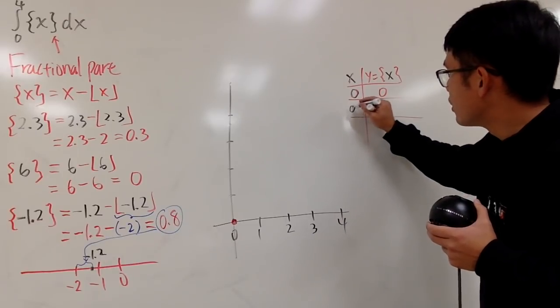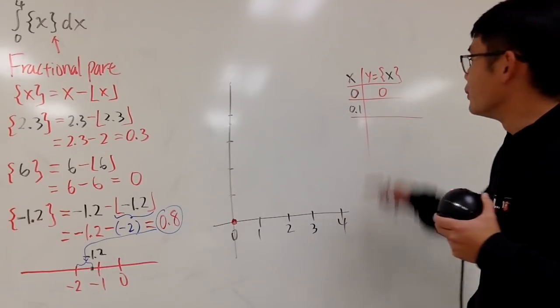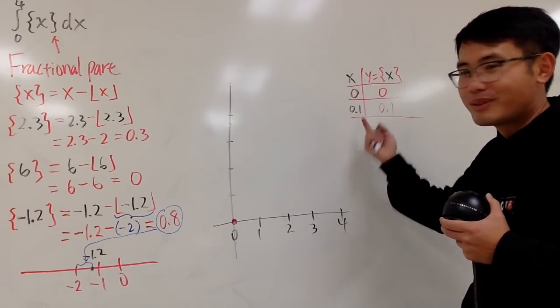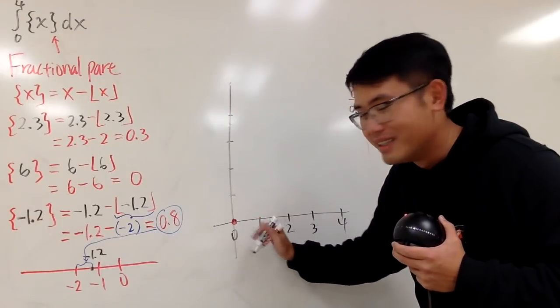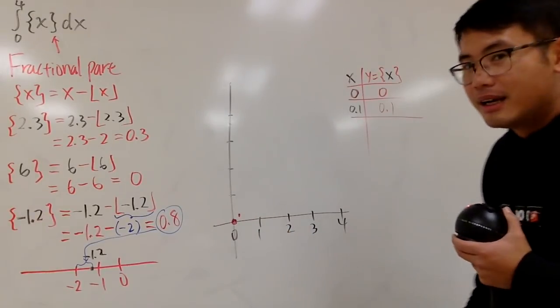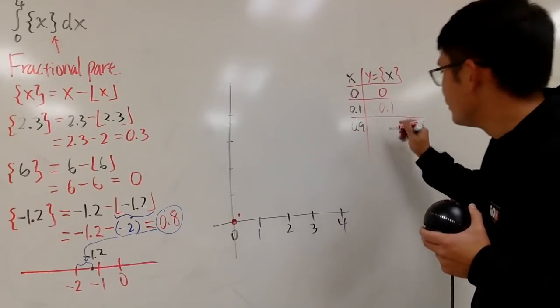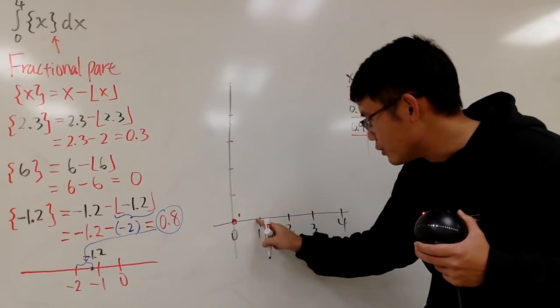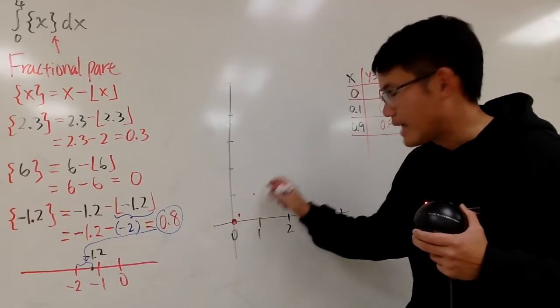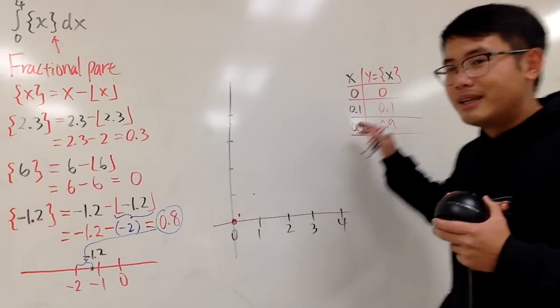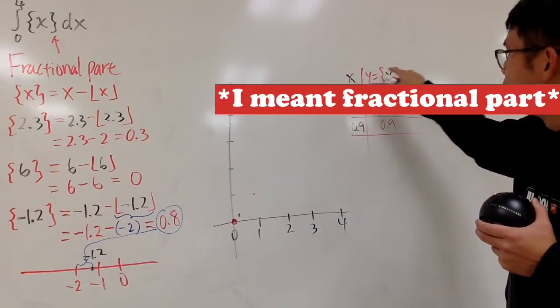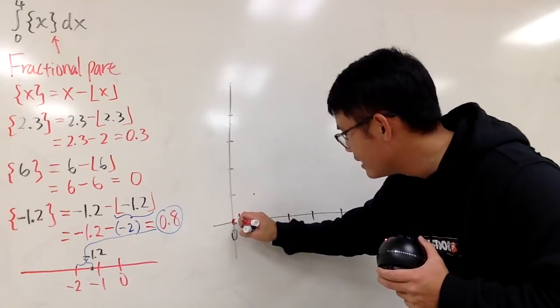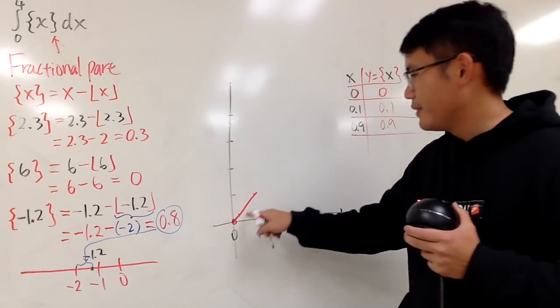And, if x is 0.1, for example, you get the fractional part. It's also 0.1. So, when you have 0.1, you get 0.1. So, it's like going up, like that. Similarly, when you have 0.9, you also get 0.9. Therefore, you will see, it's 0.9, 0.9. So, you actually have a diagonal line right here, right? In fact, floor of x is equal to x, when x is in between 0 and 1, not including 1. So, you just get this right here. This is just pretty much x.